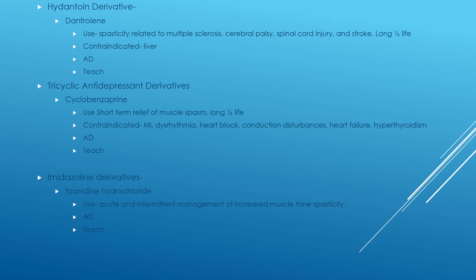Cyclobenzaprine is used for short-term relief of muscle spasms. It has a long half-life and is contraindicated with cardiovascular issues — MIs, dysrhythmias, heart block, conduction disturbances, and heart failure. It's also contraindicated with hyperthyroidism and should be used with caution in patients who might have urinary retention, increased intraocular pressure, and mild hepatic impairment. Adverse effects include drowsiness, dizziness, and anticholinergic effects — the classic 'can't see, can't spit, can't pee, can't defecate.'